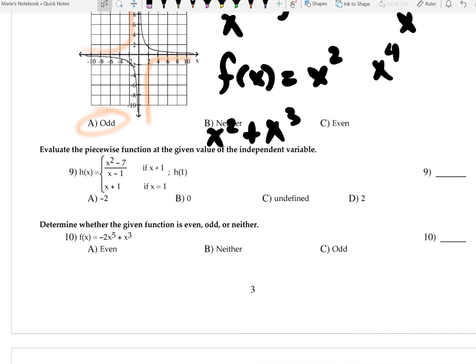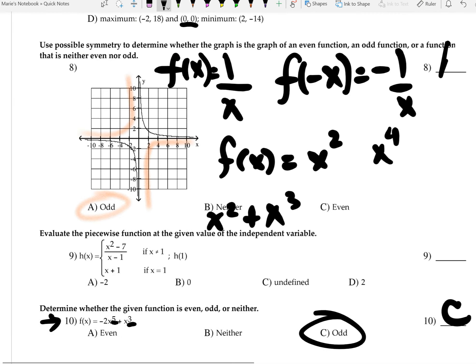Which actually leads me to this question, number 10, which I'm going to do next, real quick, since we're talking about this. Notice that both of these exponents are odd. This answer choice for number 10 would have to be C, odd. All right, so we have A for this one, for number 8.